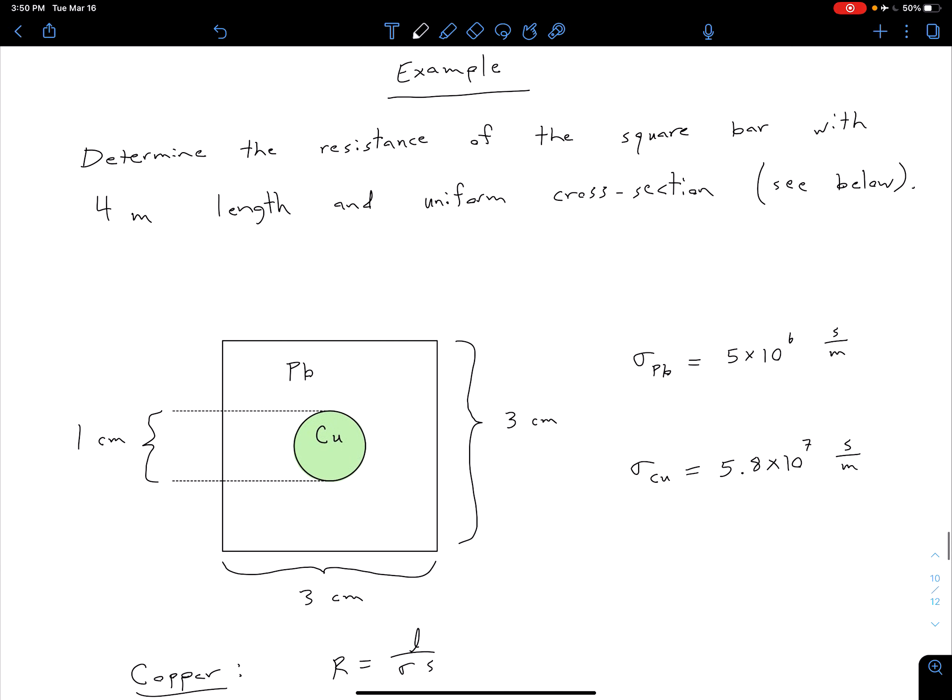But remember, we wanted the overall resistance of this square bar, so how do we get that from the resistances of these two separate segments? We can think about these two as sort of alternate paths. If we think about it from the perspective of an electron, if we're going from one end to the other, we see two paths. We can either stay towards the outside and be going through the lead, or we can be going through that inner circle and going through the copper.